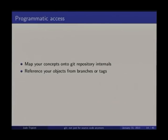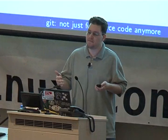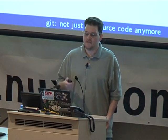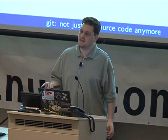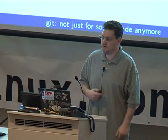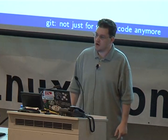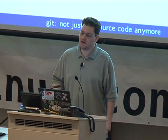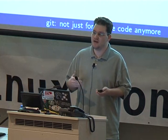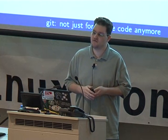When dealing with programmatic access, the very first thing you want to figure out is how your application's concepts map onto Git's repository internals. The other key detail is: make sure you reference all of your objects, because anything unreferenced will be garbage collected, and you might not otherwise have a reason to keep refs around.